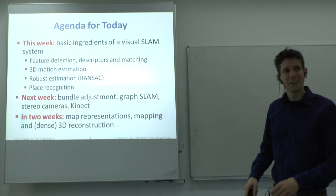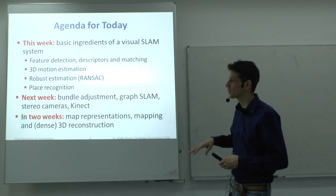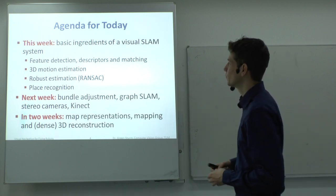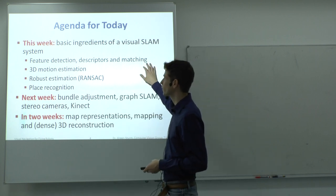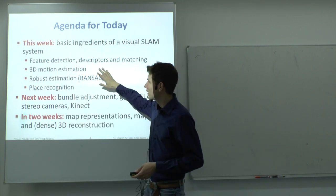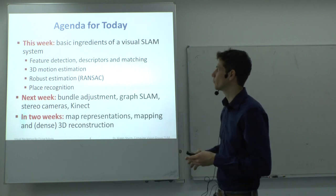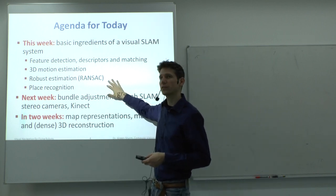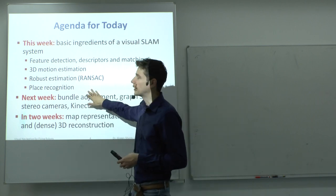The structure from motion problem is relatively complex, so I'll split it up into three weeks. This week we look at the basic ingredients: feature detection, descriptors, and feature matching. Then, as promised, we'll look at the problem of estimating the 3D motion between two frames that we match, how to make it robust against outliers or bad matches, and we'll look at place recognition.